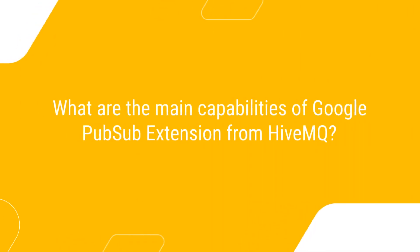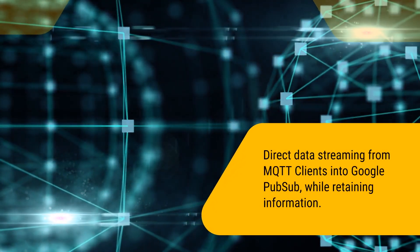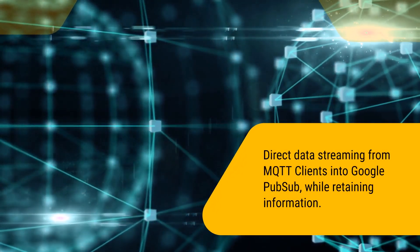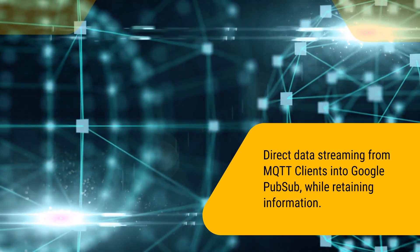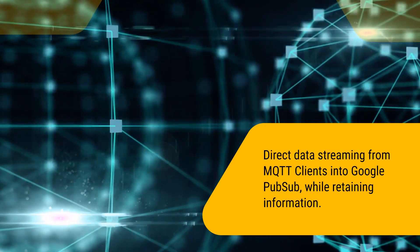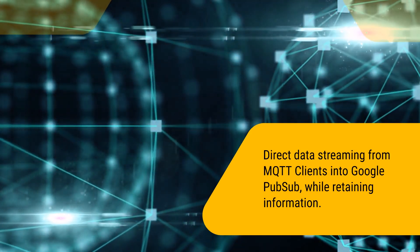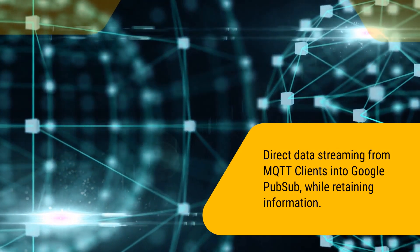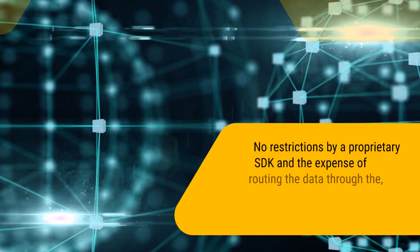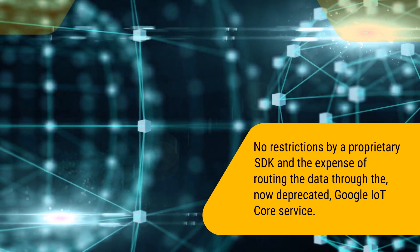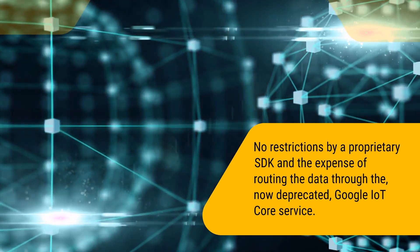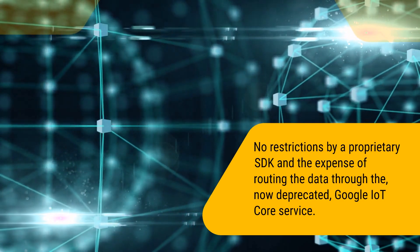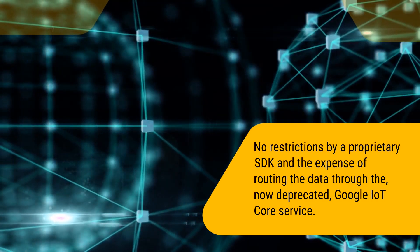What are the main features of the Google PubSub extension from HiveMQ? Enterprises now get the flexibility to use MQTT-based clients that can stream data directly into Google PubSub while retaining information. This capability helps with device management and data pipelines within GCP. With an easy means to get device data into the Google Cloud Platform for big data analytics, enterprises avoid getting restricted by proprietary SDKs and the expense of routing data through the now deprecated Google IoT Core service.